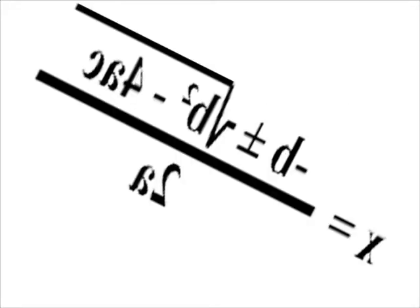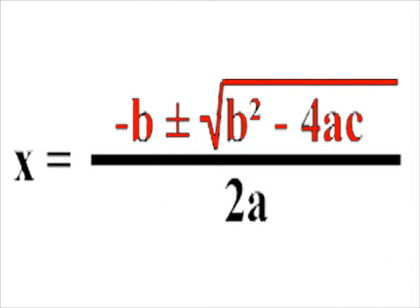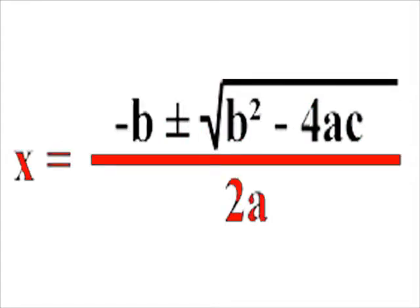Negative b plus or minus b squared minus 4ac, all under a radical sign, except negative b. Then you divide all of that by 2a — no way — and all of that is equal to x.